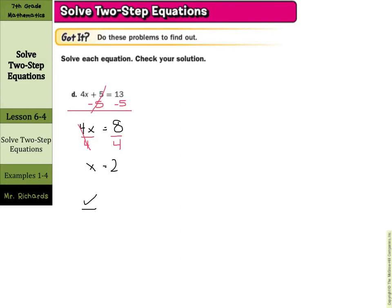And as we go to check this, rewrite our original equation, 4x plus 5 equals 13. Make your substitution in for x, which is just 2. 4 times 2 is 8. And 8 plus 5 is 13. So 13 equals 13. And x equals 2 is our solution.